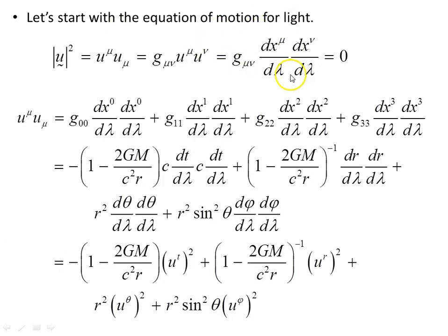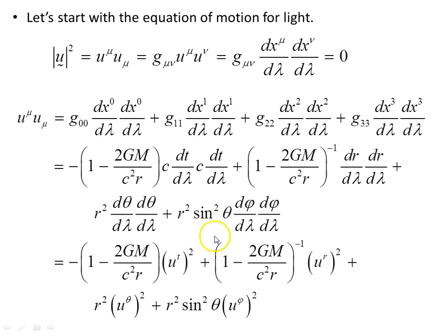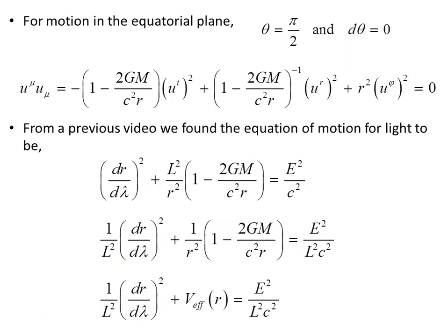Let's start with the equation of motion for light — this is recapping what's been in the previous video. The magnitude of the 4-velocity squared equals zero for light. Expanding this out in terms of its metric components g₀₀, g₁₁, and so on, with the tangent vectors in each direction in the coordinate basis, and simplifying: dr/dλ is u^r, dθ/dλ is u^θ, dφ/dλ is u^φ. For motion in the equatorial plane, θ = π/2 and dθ = 0, which simplifies the equation of motion.